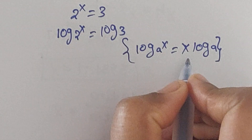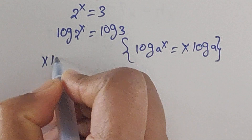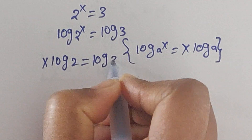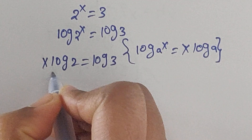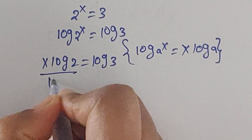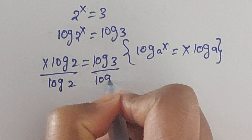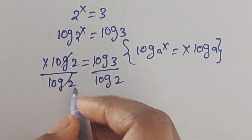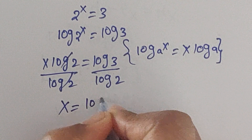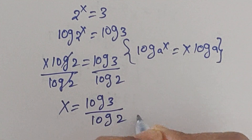Using this formula, we can write x·log 2 equals log 3. Now divide both sides by log 2, so log 2 cancels out, giving x equals log 3 divided by log 2.